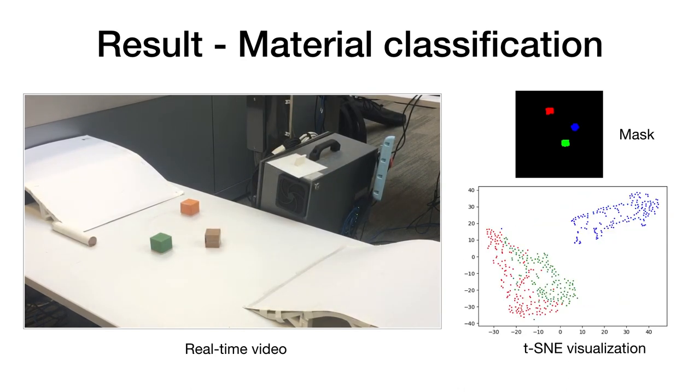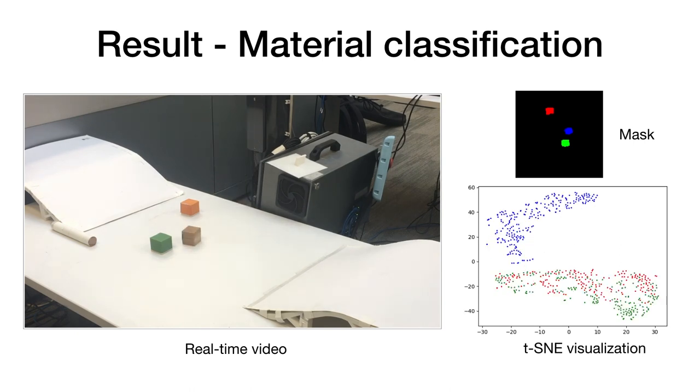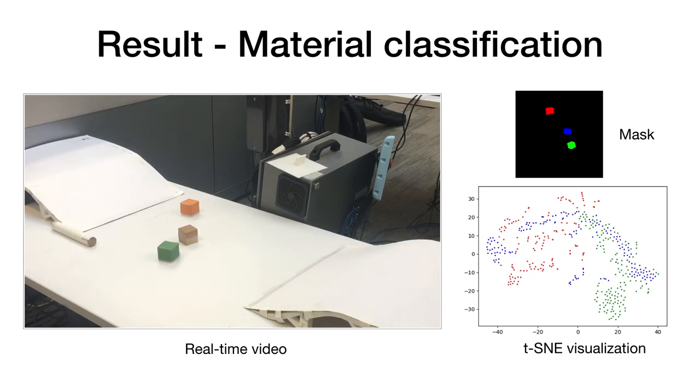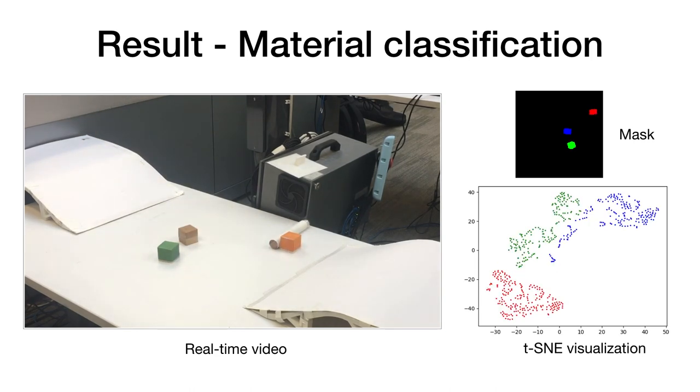In this experiment, the robot interacts with three objects with different physical properties but with the same appearance. During the interaction, we visualized the pixel-wise representation features using two-dimensional TSNE. Initially, the three objects cannot be distinguished from each other, but after several interactions, the representation features gradually separate themselves from each other in the embedding space.